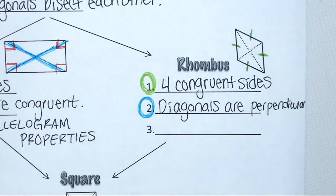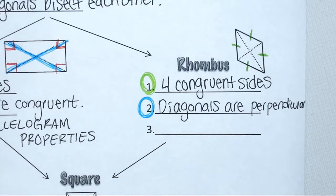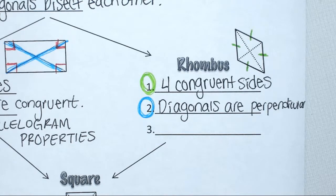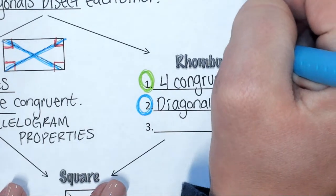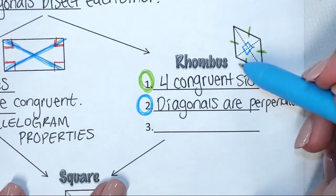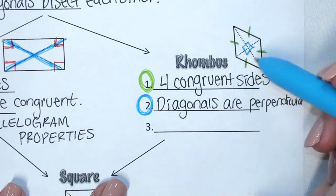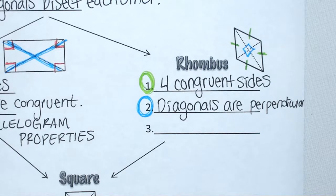Grab a different color and circle number two in that color. How would you show that the diagonals are perpendicular? Perpendicular means they form a 90-degree angle. So what would I draw in my picture? A 90-degree angle — in the middle. So in the middle, where your diagonals cross, you have four right angles there. That's what it means for your diagonals to be perpendicular.